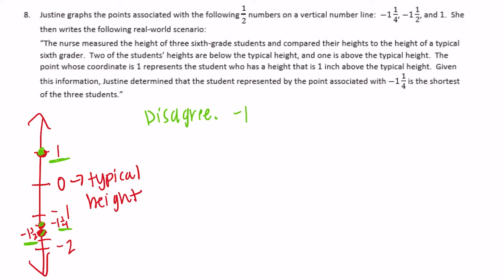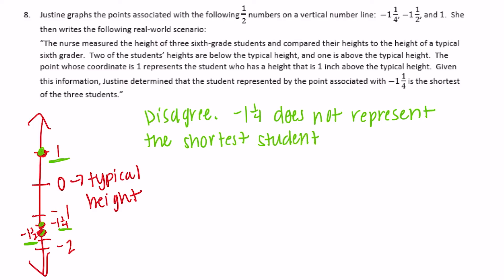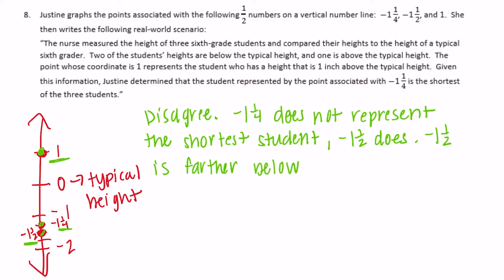Negative one and one-fourth does not represent the shortest student — negative one and one-half does. Negative one and one-half is the shortest student because negative one and one-half is farther below zero on the number line.